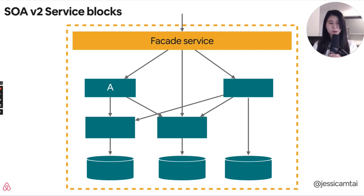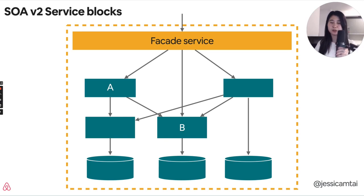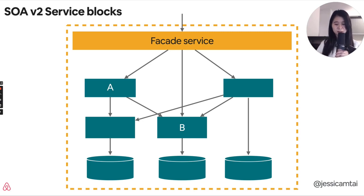In our Slack channels, we often get the question: does this particular field belong to service A or service B? We originally had these data fields in different services instead of a single large user service or home service, because these different fields have different SLA and isolation requirements. However, they interact closely since they are focused on the same core entity. We want to maintain the separation of code and thus separate services and development iterations, but still expose them via the single facade service API.